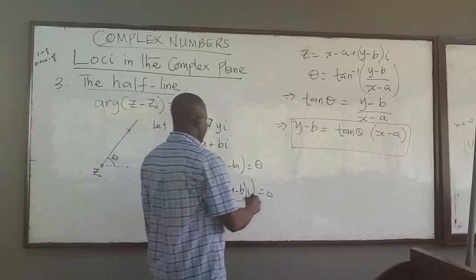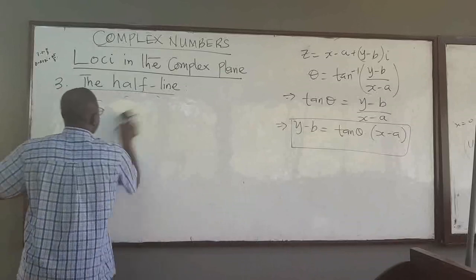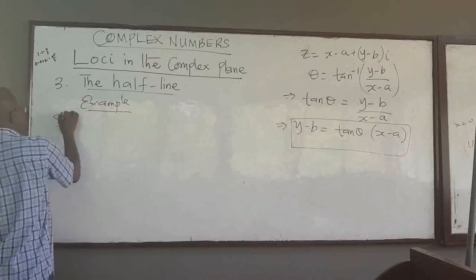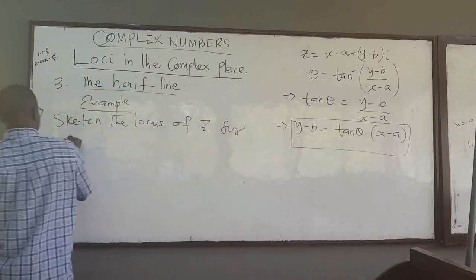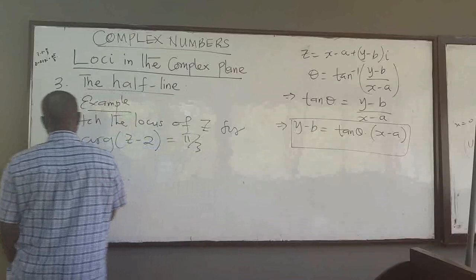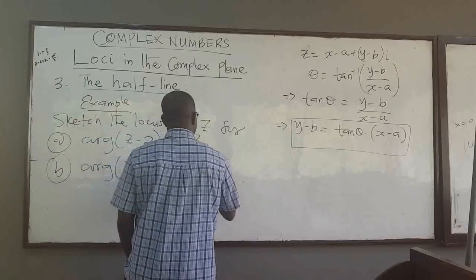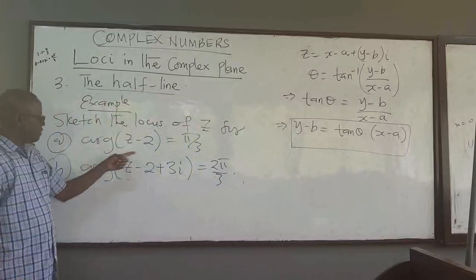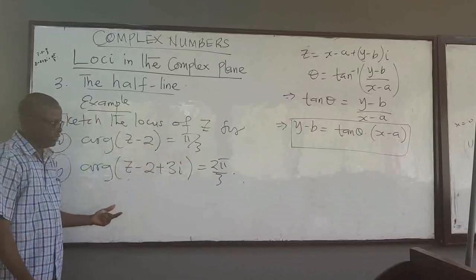So we can now look at examples of the half line. We will do two examples. Sketch the locus of z for: (a) arg(z minus 2) equals pi over 3, and (b) arg(z minus 2 plus 3i) equals 2pi over 3. Once you see the argument of a complex number equal to some angle, begin thinking about the half line.